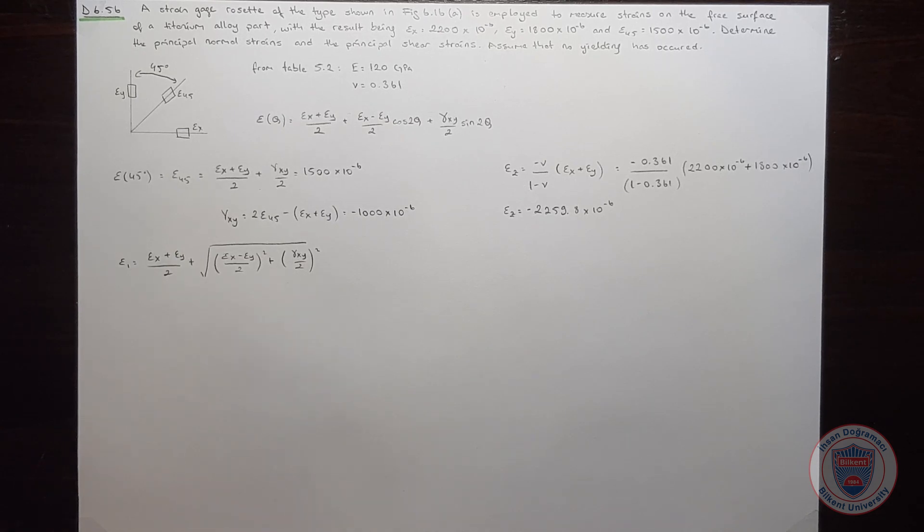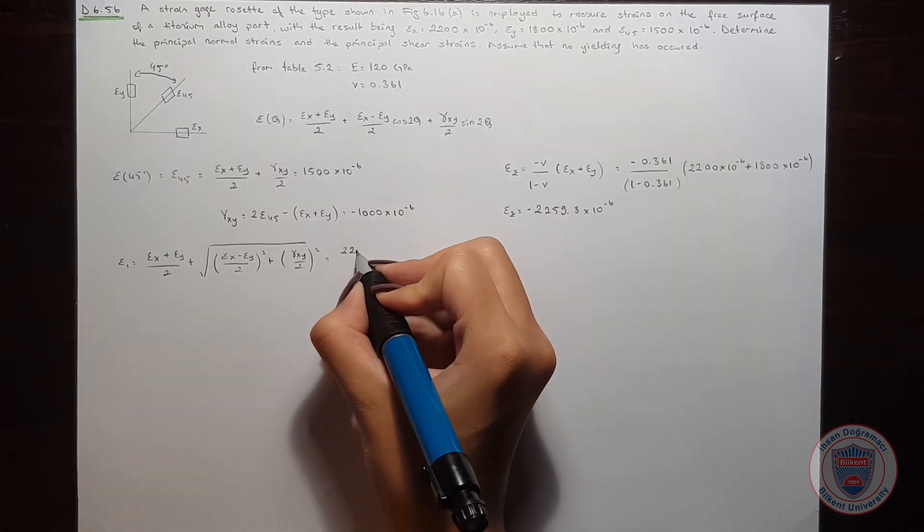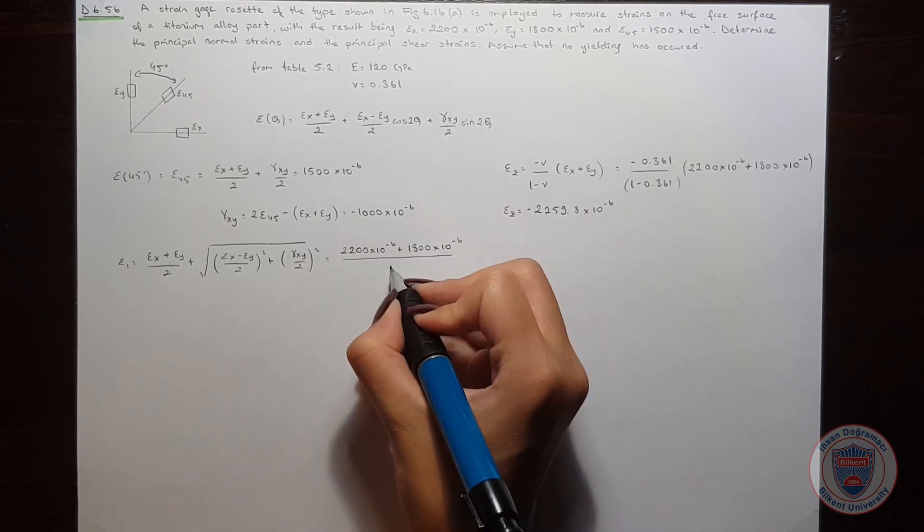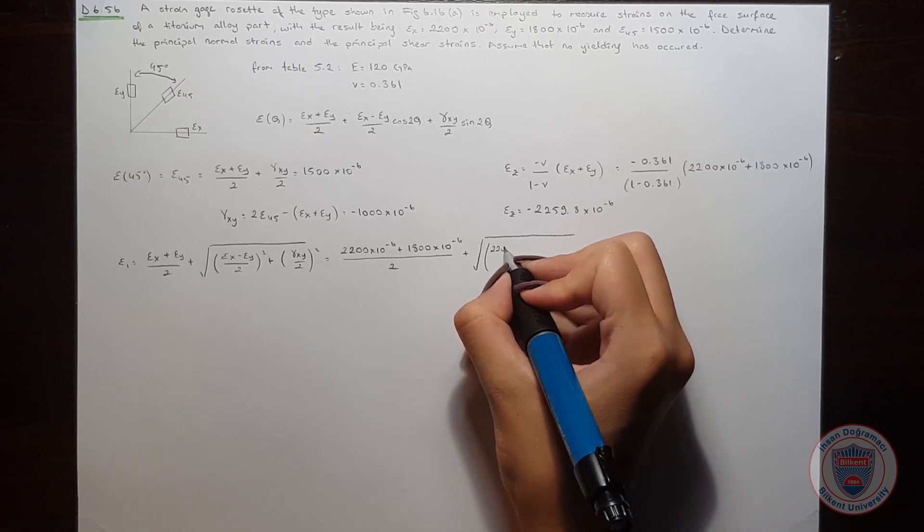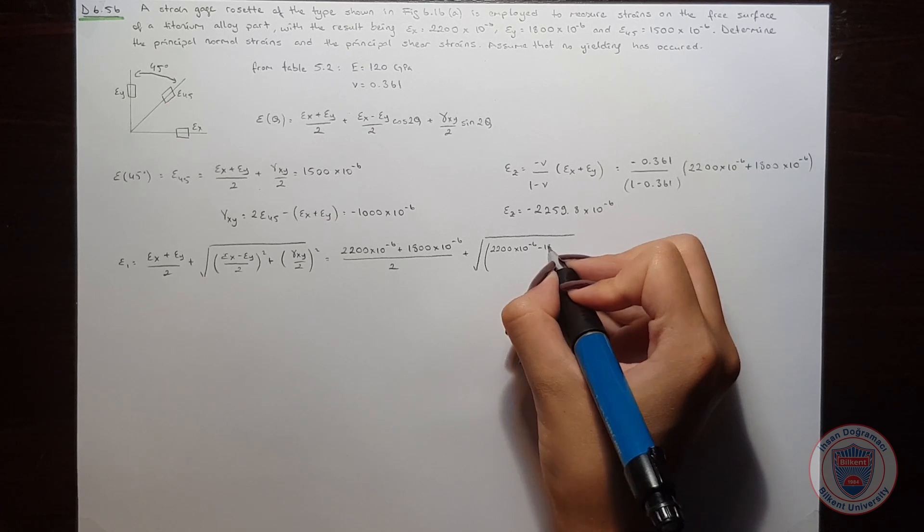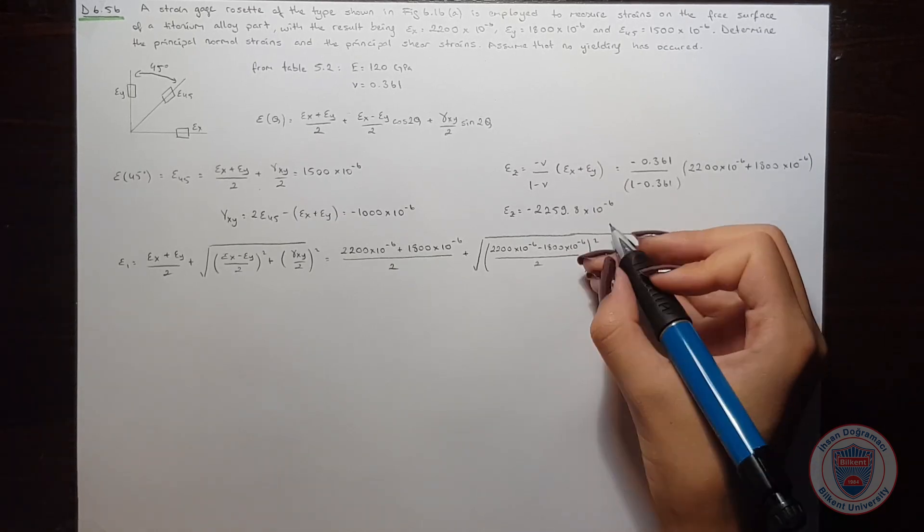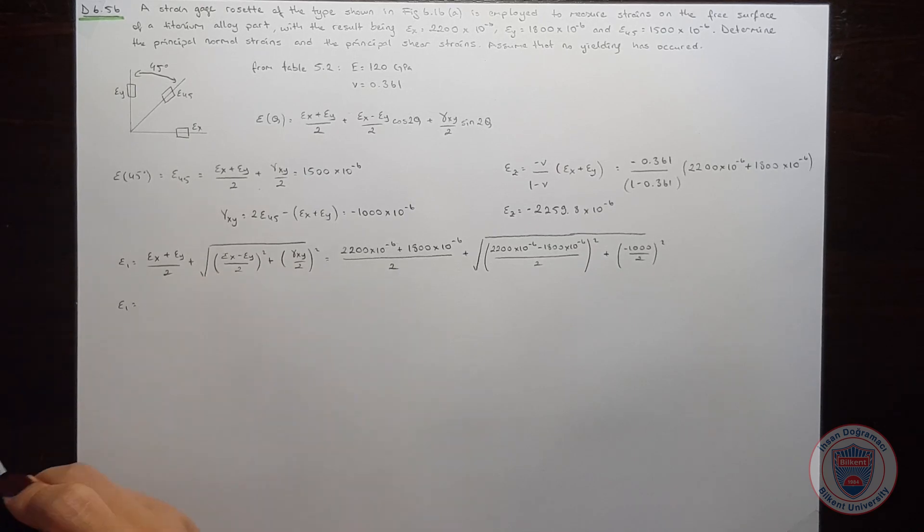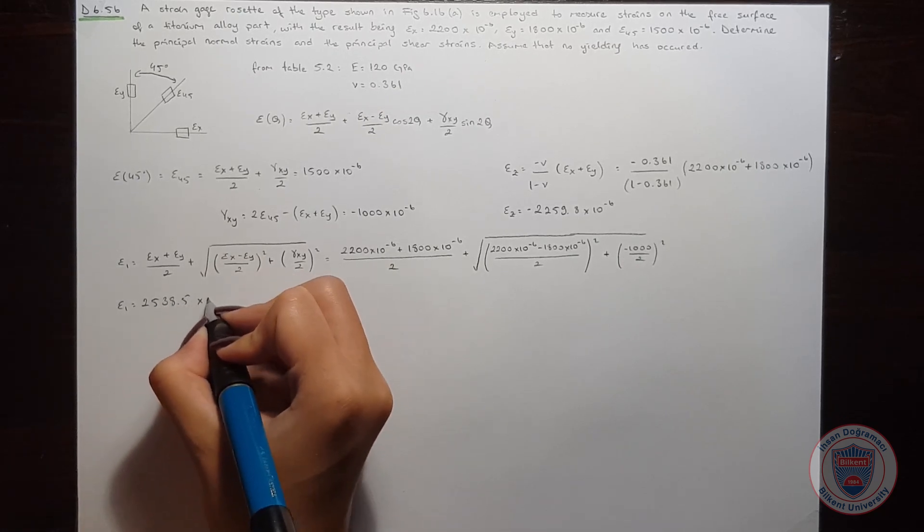As you can notice from the Mohr's circle, this will be the center of the circle which is a, and this is the radius of the circle which is r. Let's substitute the values. When we compute, we will obtain ε1 is equal to 2538.5 times 10 to the power of minus 6.